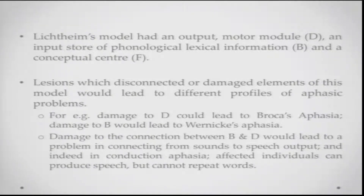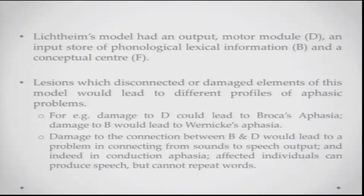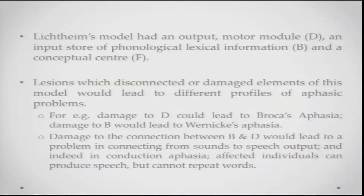This model began explaining different patient profiles. Broca's aphasia would correspond to damage to module D — the speech phonetic movement programs — producing very effortful, laborious speech with incorrect grammar. Wernicke's aphasia would correspond to damage to module B — the phonological input lexicon — resulting in impaired speech comprehension. In conduction aphasia, damage to the connection between B and D would lead to a problem connecting sounds to speech output; affected individuals can produce speech but cannot repeat words.